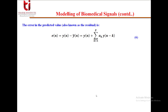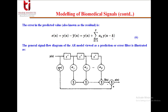The error — also called the residual — is computed as e(n) = y(n) - ŷ(n) = y(n) + ∑(k=1 to p) a_k · y(n-k). The signal flow diagram of the AR model viewed as a prediction or error filter has y(n) passed through delay elements z^(-1) with filter coefficients a_0, a_1, a_2, up to a_p, and these are subtracted from y(n) to produce e(n).